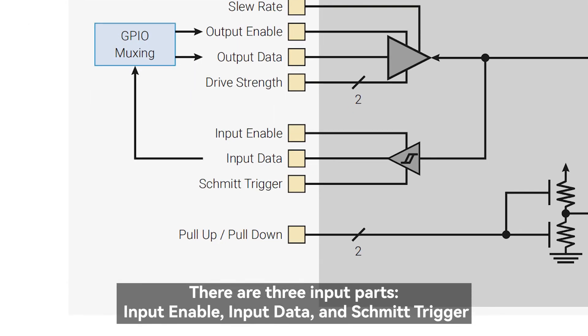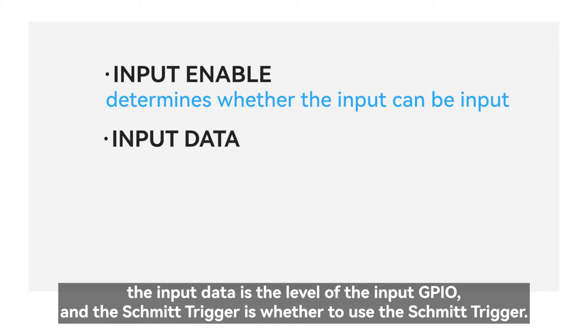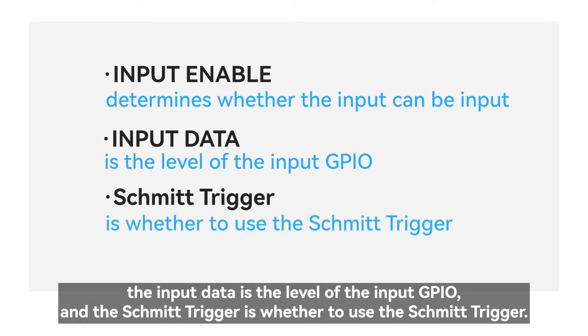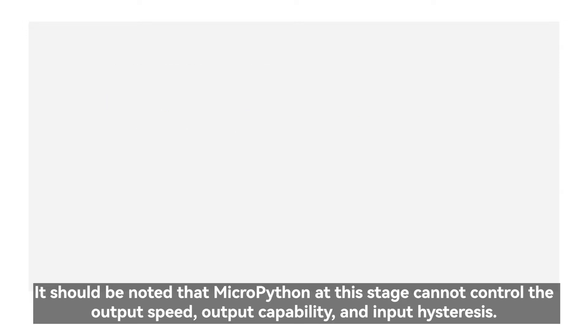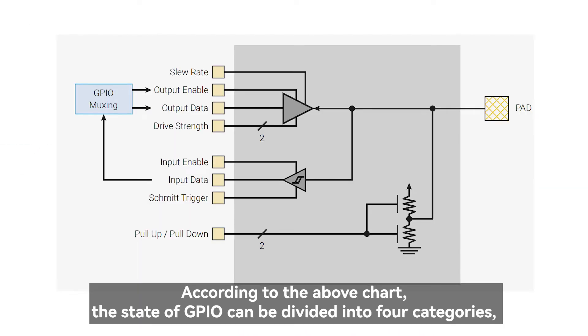There are three input parts: input enable, input data, and Schmidt trigger. The input enable determines whether the input can be input, the input data is the level of the input GPIO, and the Schmidt trigger is whether to use the Schmidt trigger. It should be noted that MicroPython at this stage cannot control the output speed, output capability, and input hysteresis.